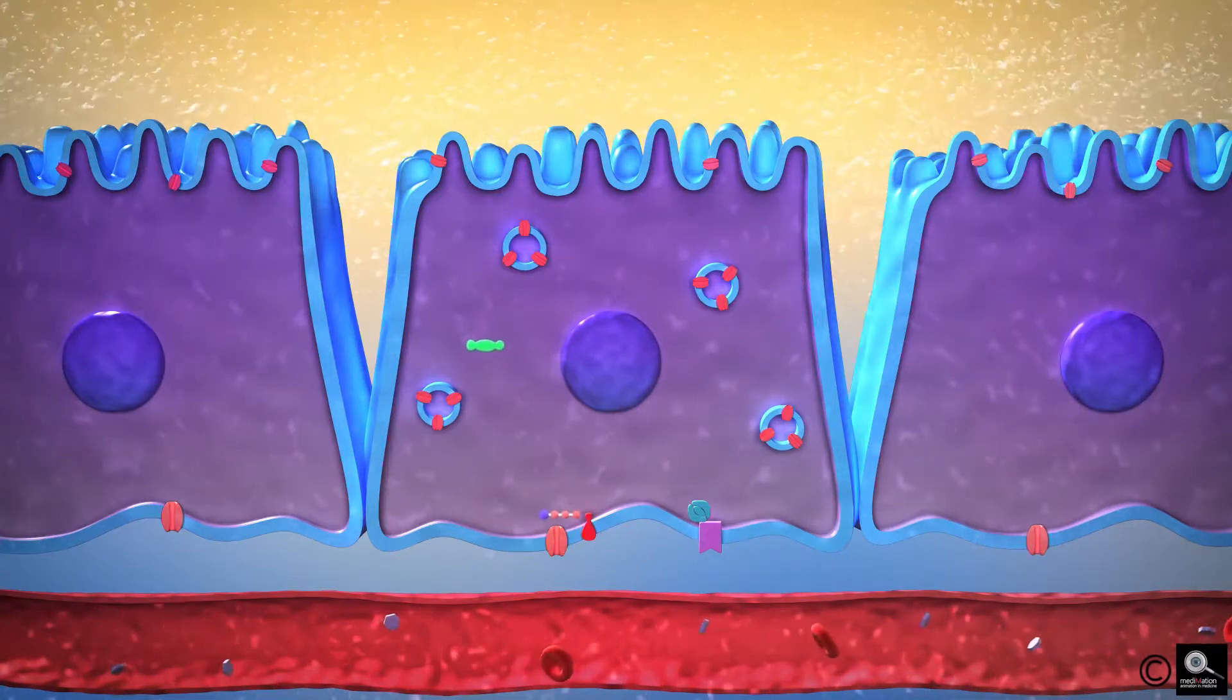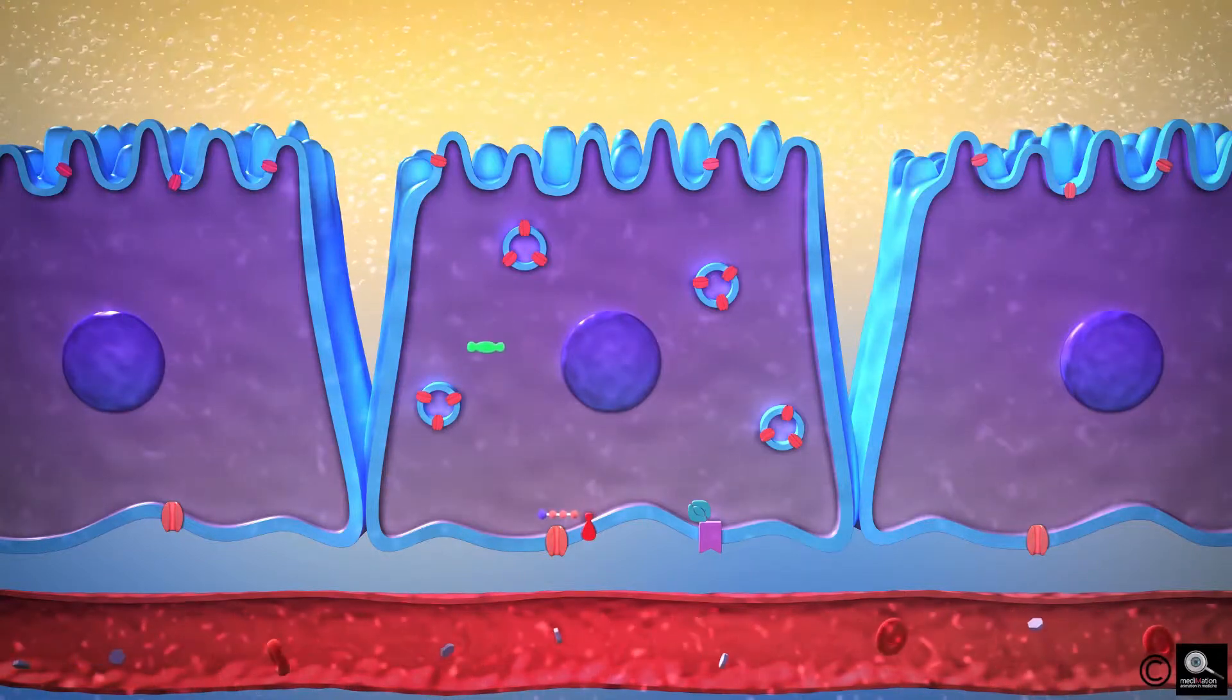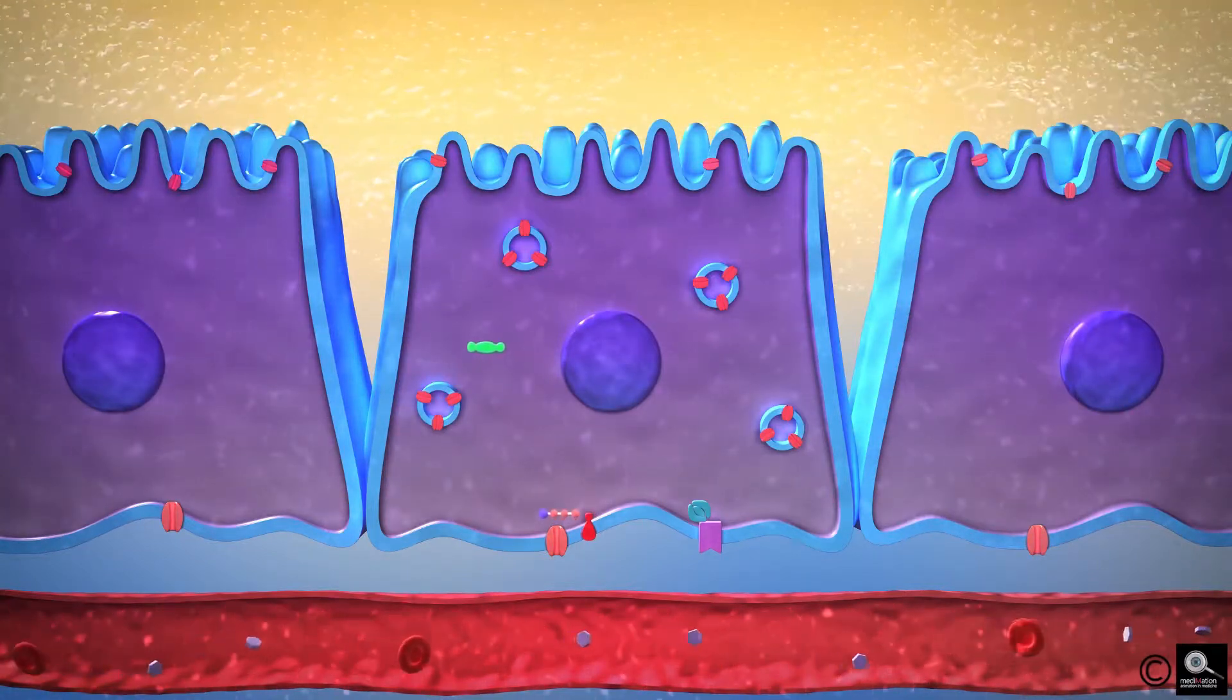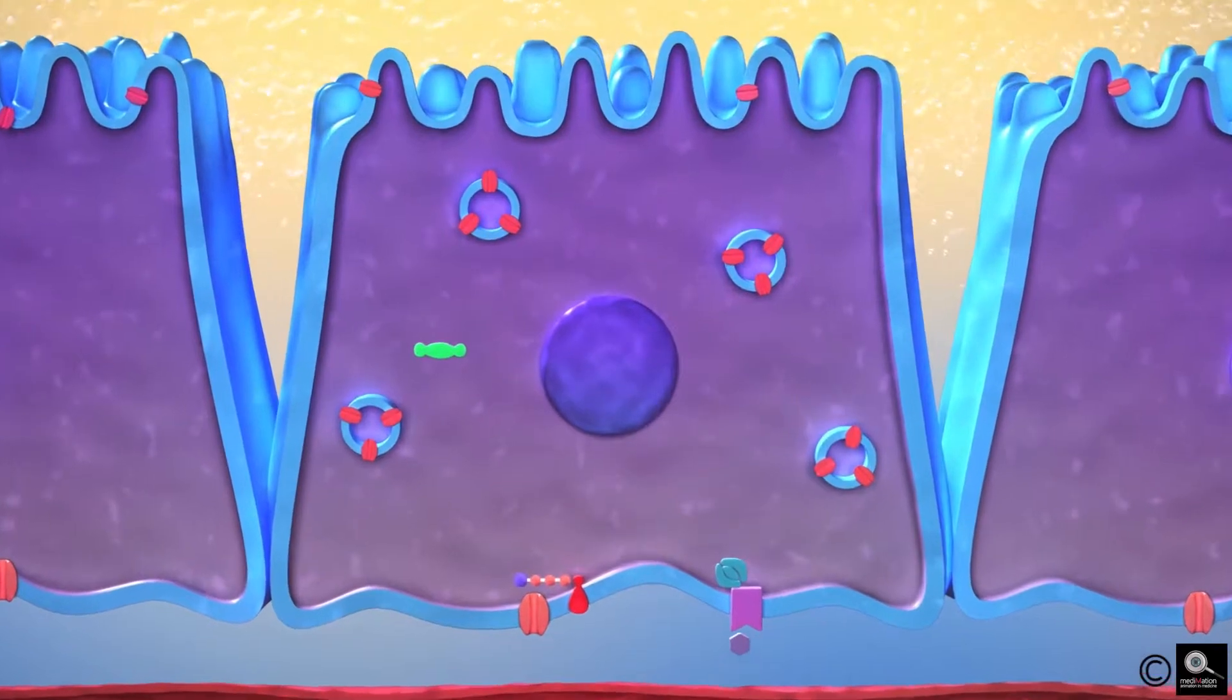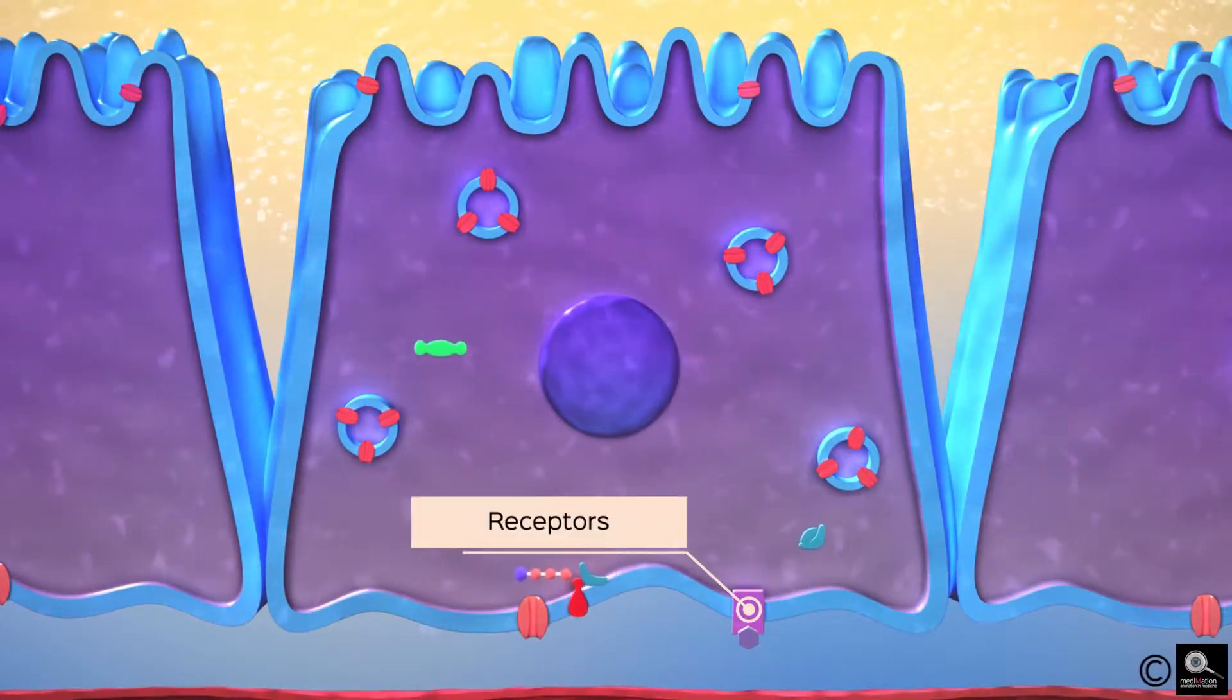Let us see how ADH acts on the cells of the distal convoluted tubule, the collecting tubule and the collecting duct. ADH binds to V2 receptors on the basolateral cell membranes of the tubular cells.